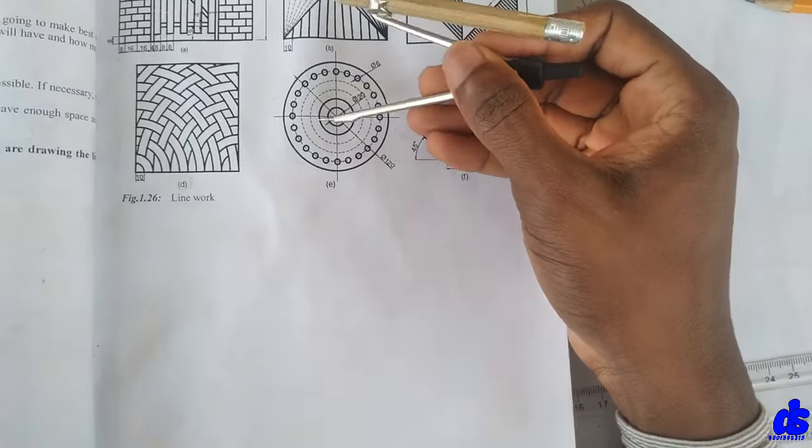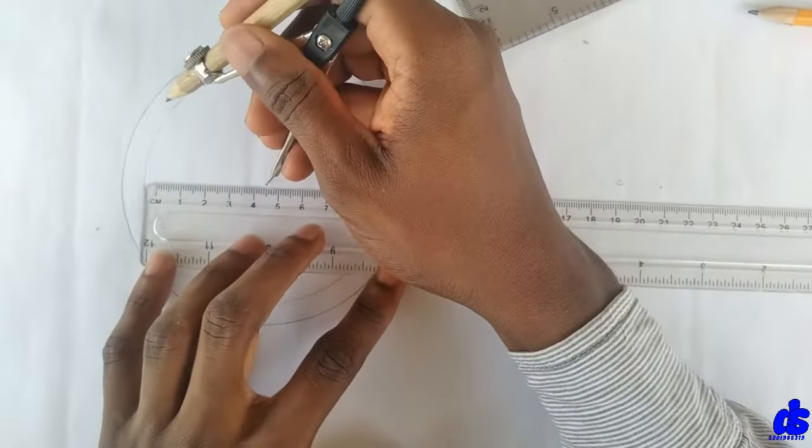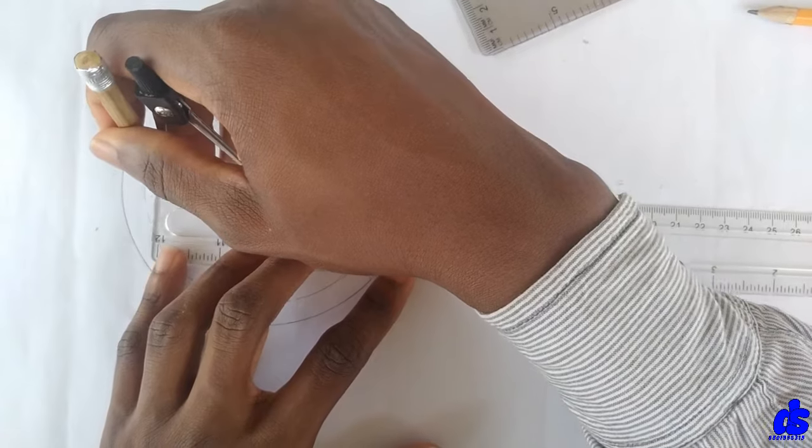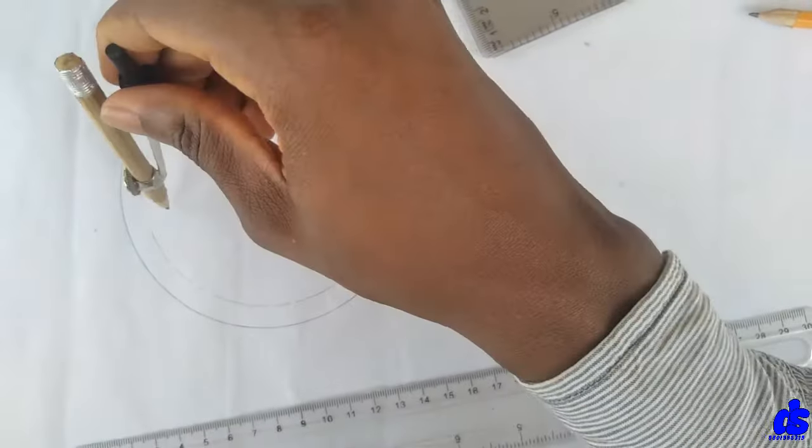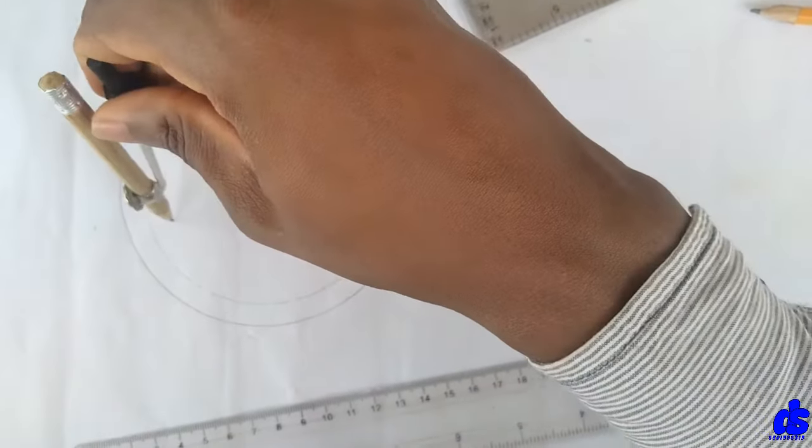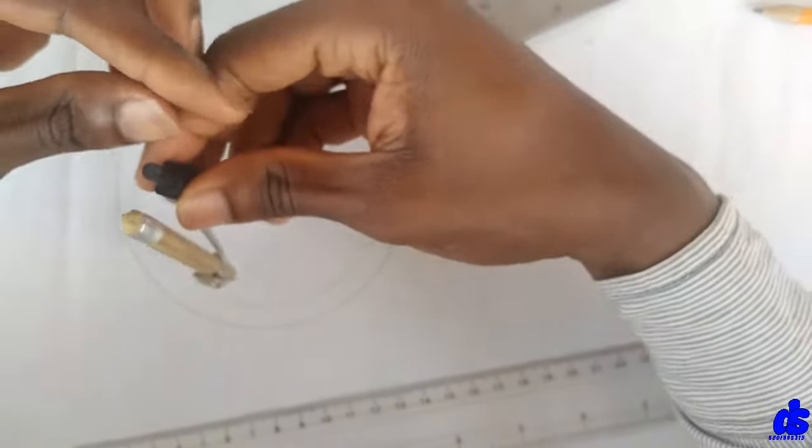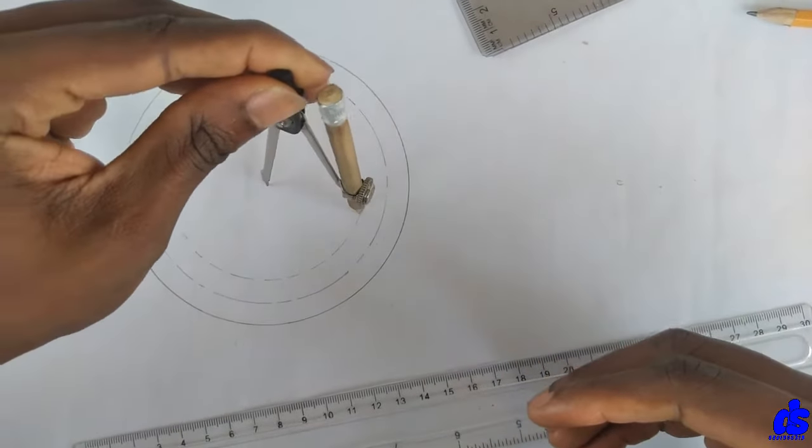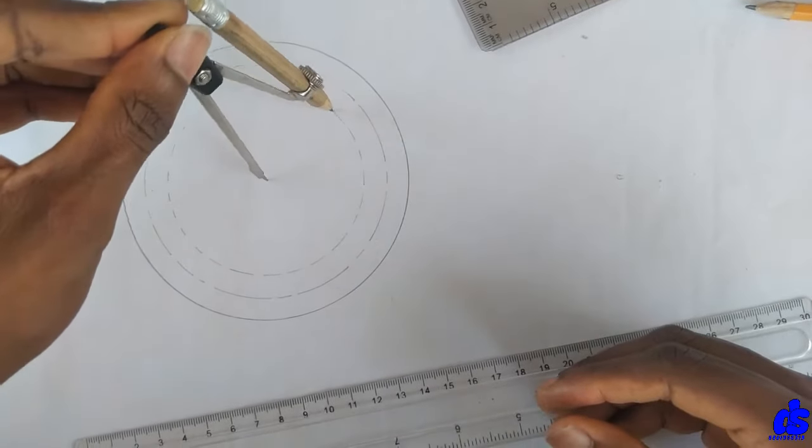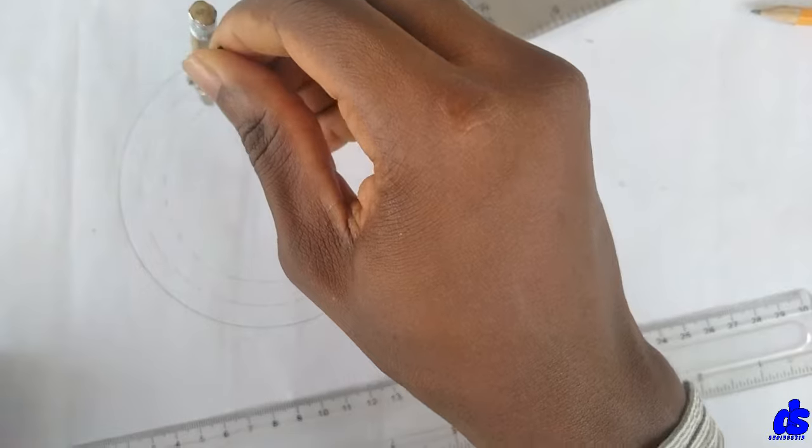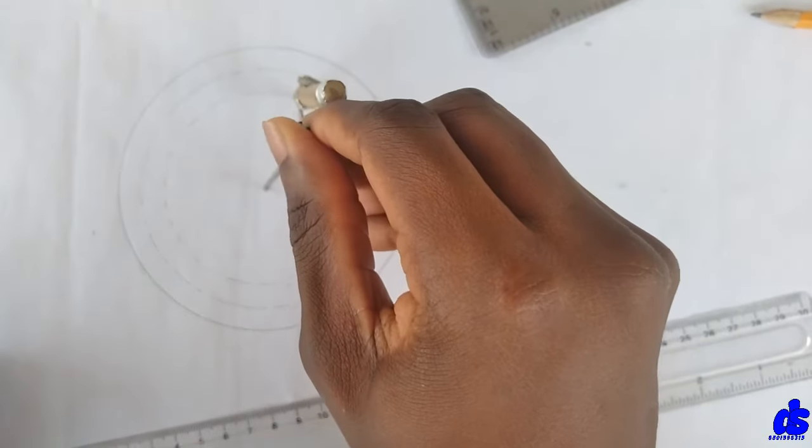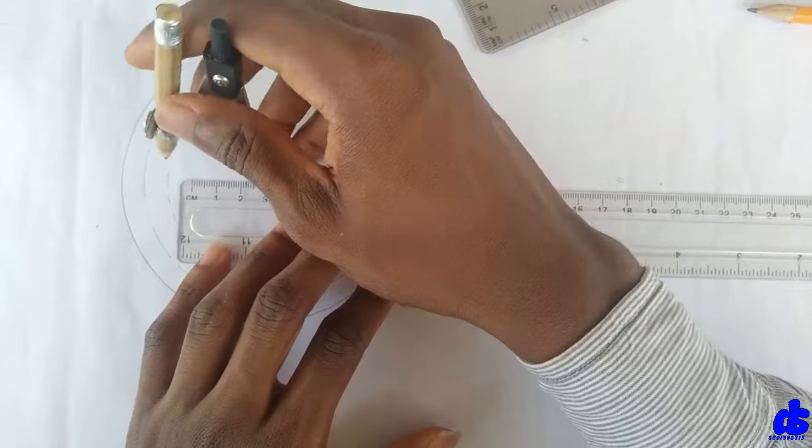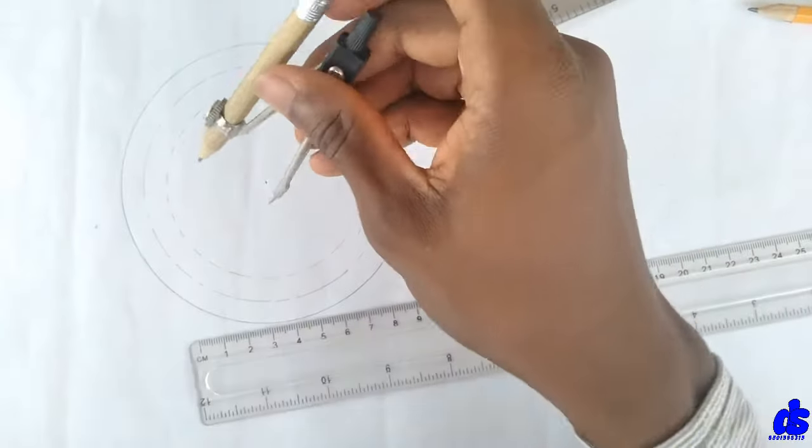The next two circles are short dashes so now we're going to open to 40, then short dashes. Let's move on to the next one, 30. This is short dashes.